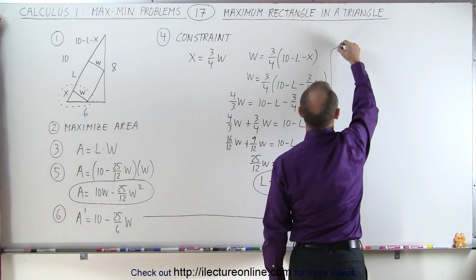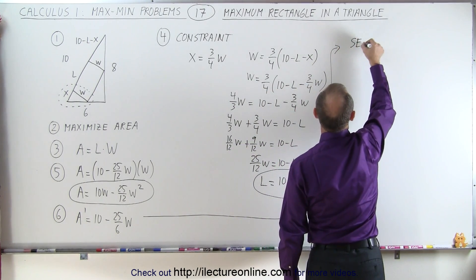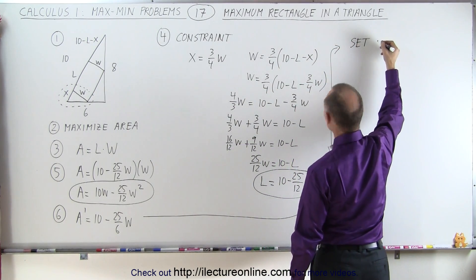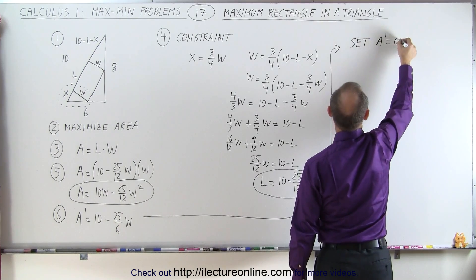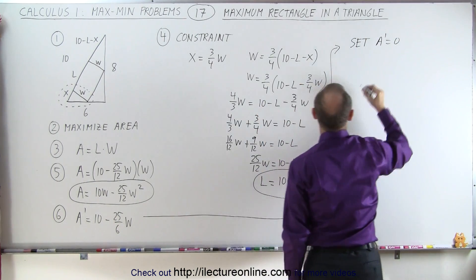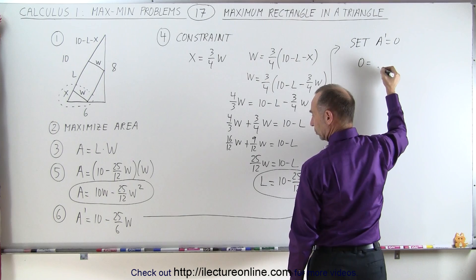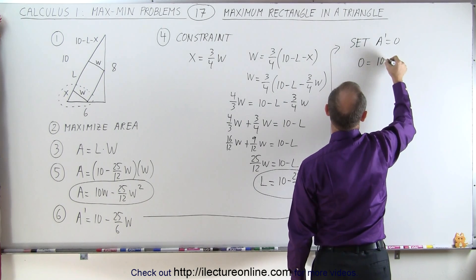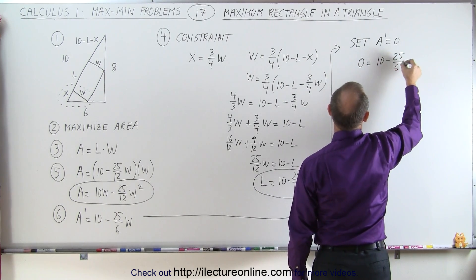So let's go over here. Now we're going to set the area prime equal to 0 so we can solve for W. So we get 0 is equal to 10 minus 25 over 6 W.